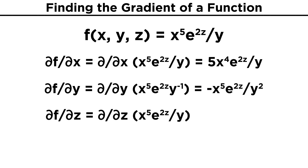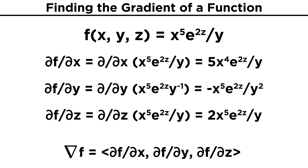Finally, we will take the derivative with respect to z while keeping x and y constant. We must differentiate e to the two z, and following the chain rule, we simply keep the e to the two z but bring down the derivative of the exponent two z, which is two. This gives us two e to the two z, and putting it together with the constant terms, we get two x to the fifth times e to the two z over y. We now have all three partial derivatives, so to get the gradient, we simply put them into the vector form of df dx, df dy, df dz.